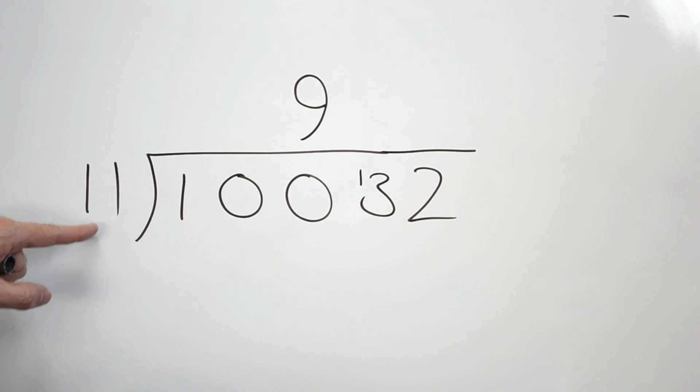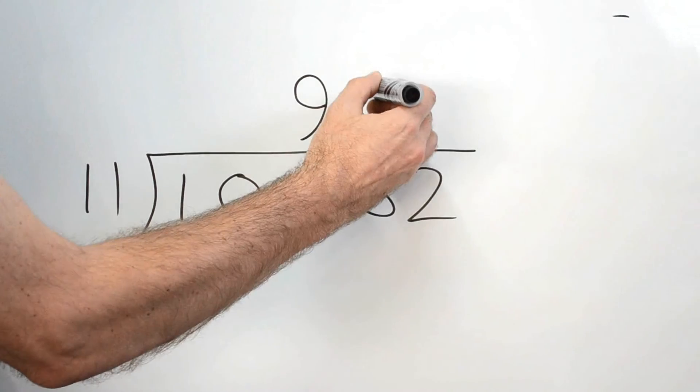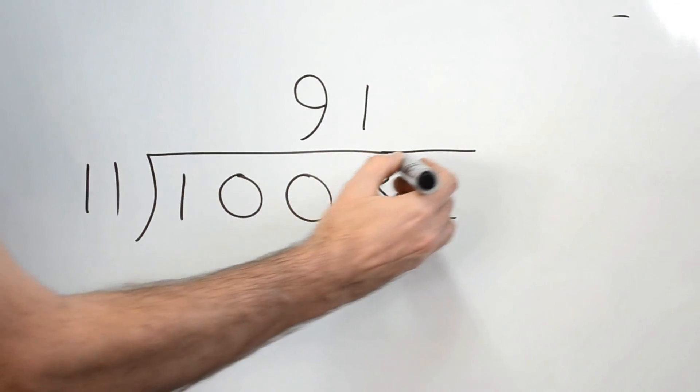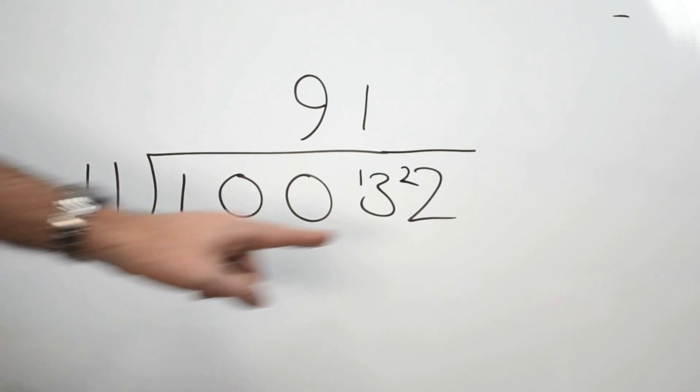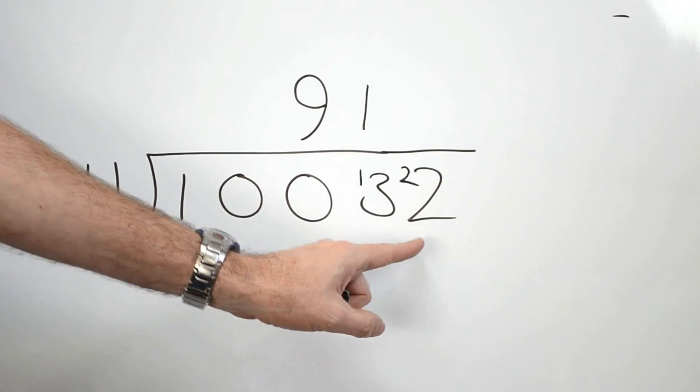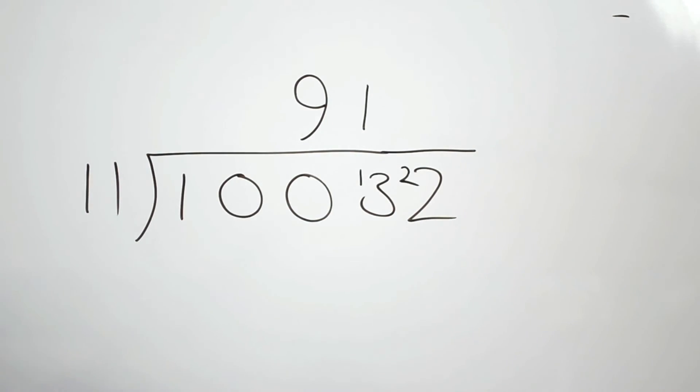Okay. So we can fit 11 into 13, which is actually 13 tens. How many times can we fit 11 into 13? One. One times. Remainder of two. With a remainder of two. Quite right. Now, we've got a lovely, neat number that we can fit into there. Because 11 goes into 22 exactly two times.